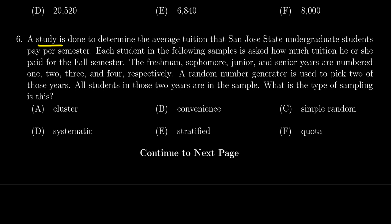Each student in the following samples is asked how much tuition he or she paid for the fall semester. There's four groups that they're put into: either freshmen, sophomores, juniors, or seniors.